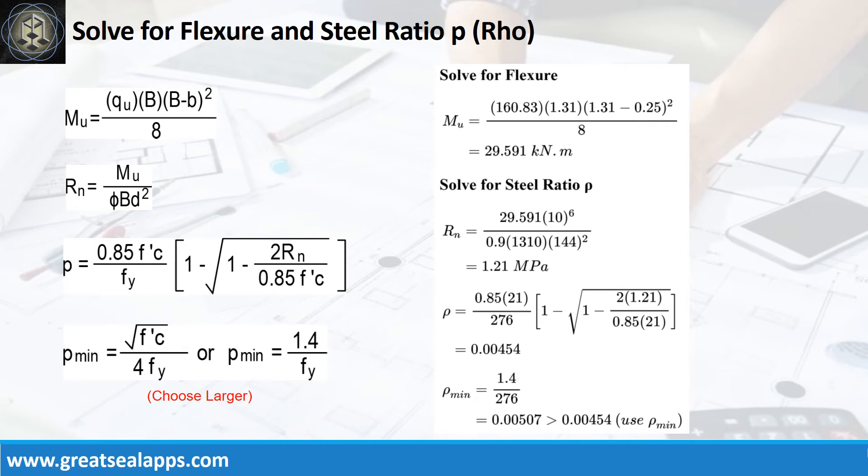Given resistance factor equals 0.9, B equals 1,310 mm, and D equals 144 mm, the beam design ratio Rn equals 1.21 MPa. And reinforcement ratio ρ equals 0.00454. Use ρ minimum of 0.00507.